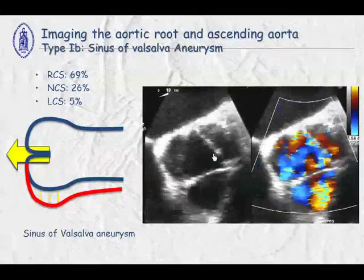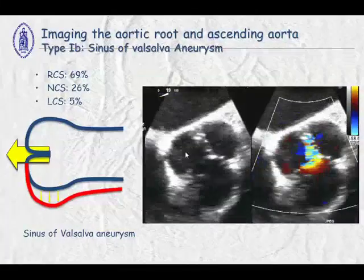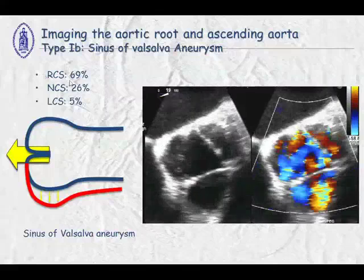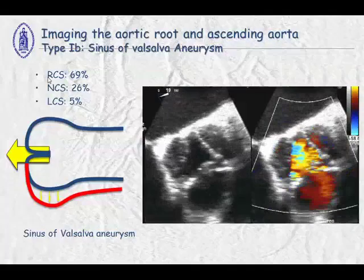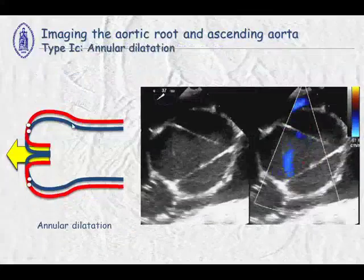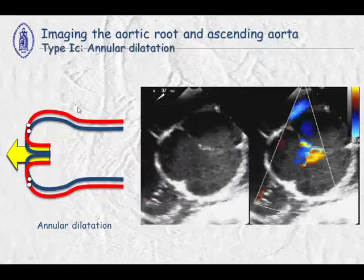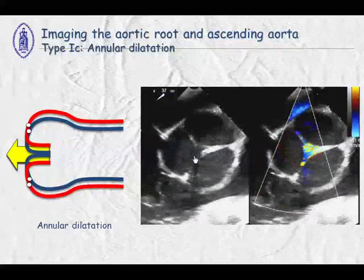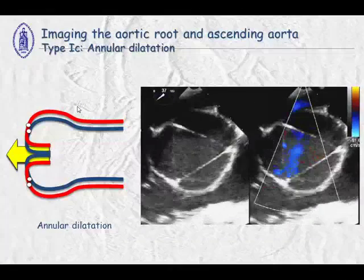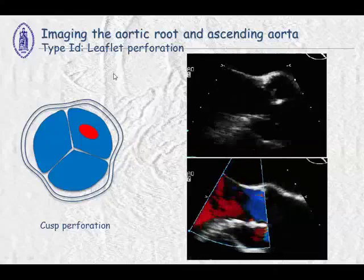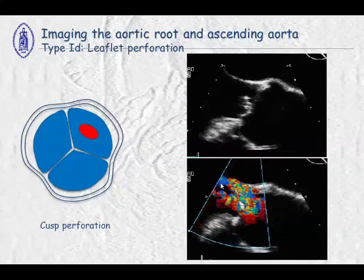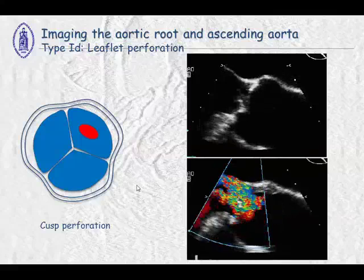In the short axis view at 90 degrees compared to the long axis view, dilatation is most frequently at the level of the right coronary sinus — 69%. This is an example of annular dilatation, where you see a loss of central coaptation with the regurgitation jet at this level. This is a leaflet perforation example, such as after endocarditis, and you can see a huge jet at the level of the perforation.